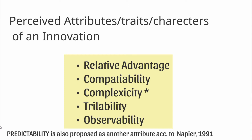Suppose an extension service provider wants to introduce broccoli crop for farmers traditionally cultivating cauliflower. Farmers perceive this innovation — broccoli cultivation — by the following attributes: Is this broccoli crop relatively more advantageous than cauliflower? Is it compatible with the economic or social conditions of the farmer? Is the production of broccoli complex? Can I try the broccoli crop on a small extent? Are the yields of the broccoli crop visibly good?